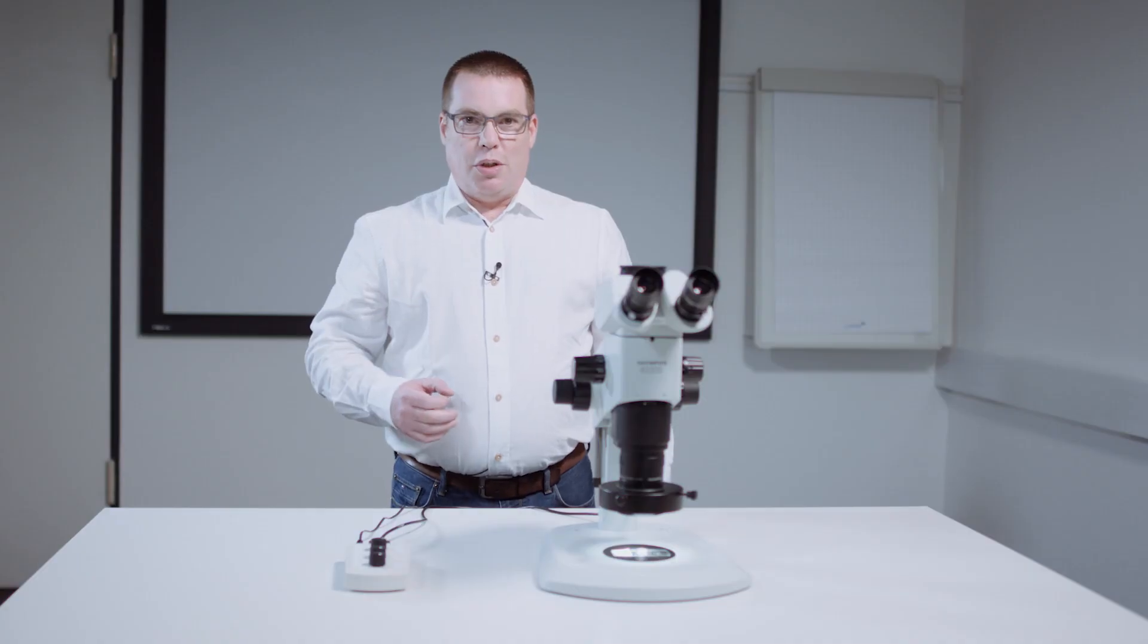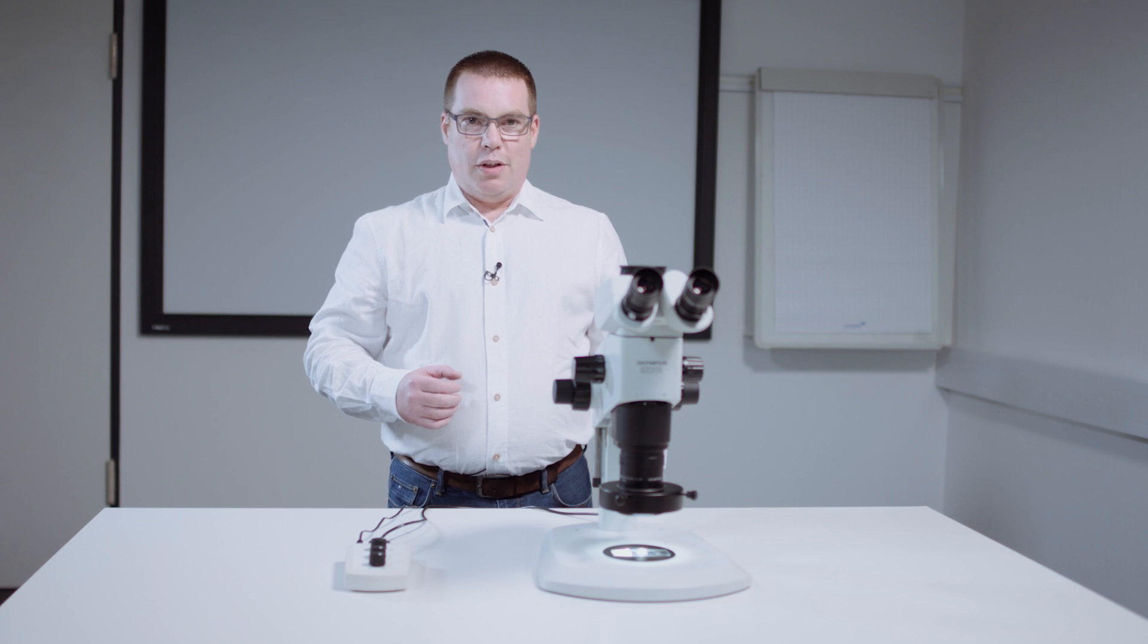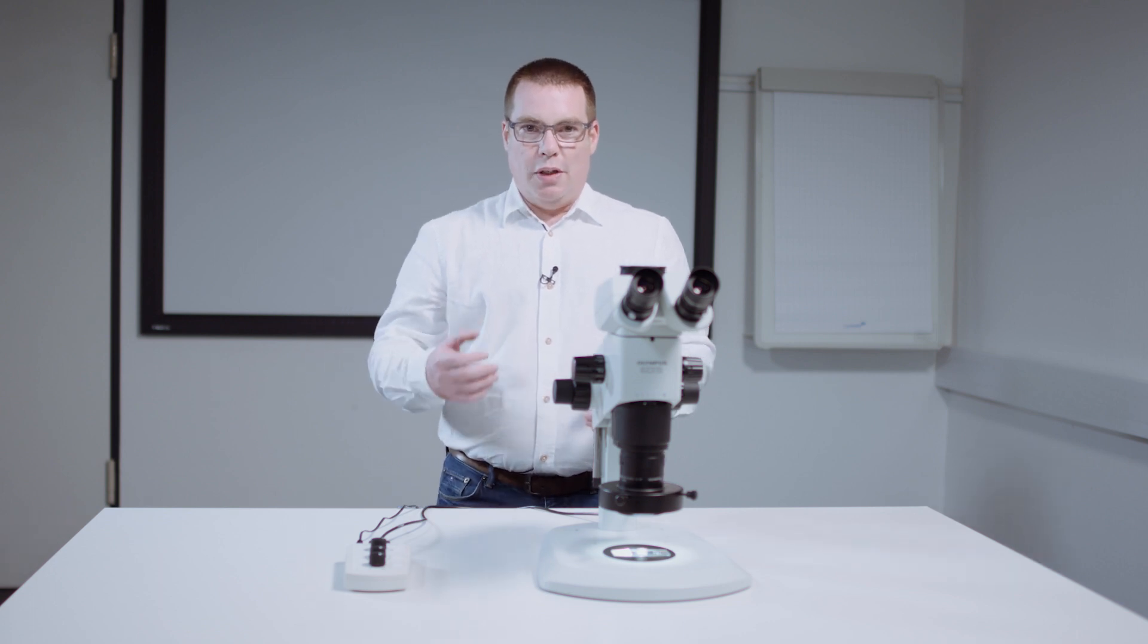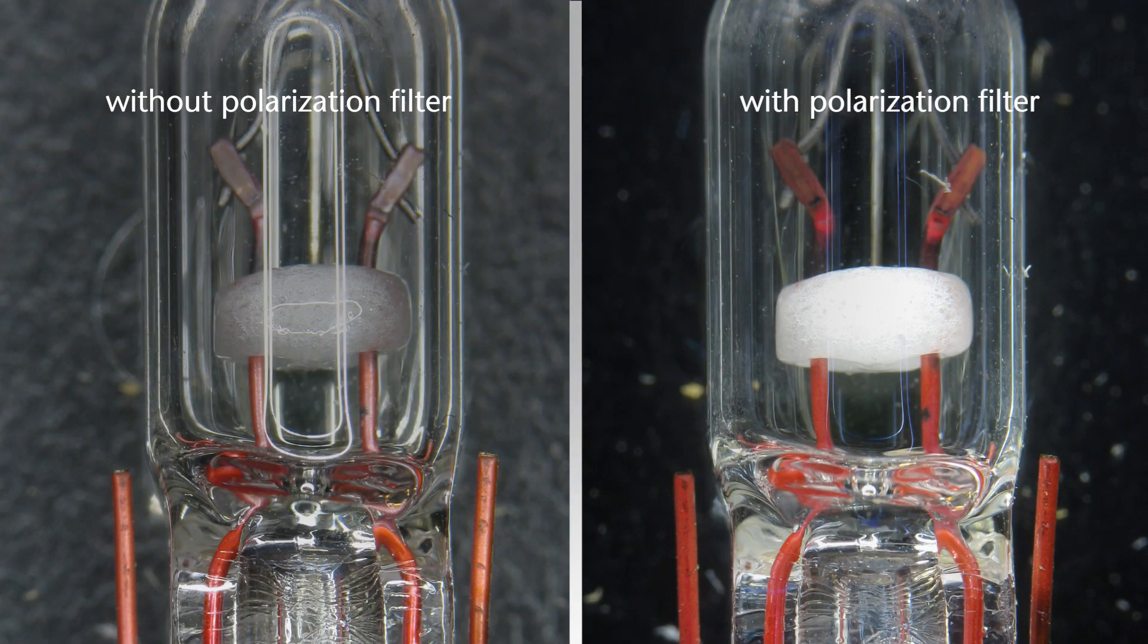Polarization is generally used to reduce surface reflections in stereo microscopy. For example, polarization can be used to effectively reduce reflections on cylindrical surfaces, such as the glass surface of a light bulb.